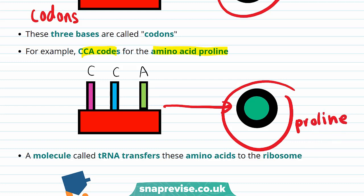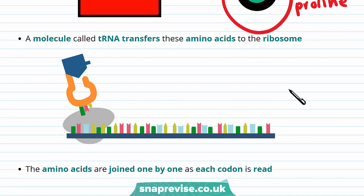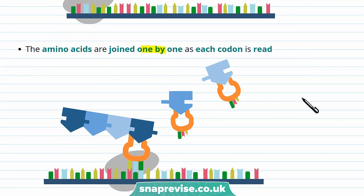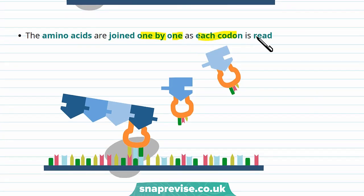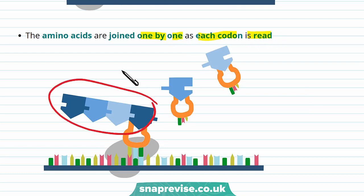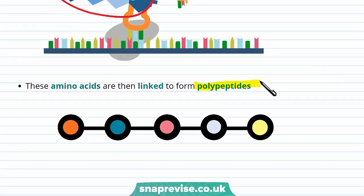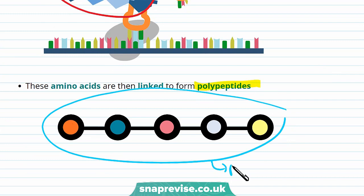So now we know what amino acids to make. A molecule called tRNA transfers these amino acids to the ribosome. The T in tRNA stands for transfer, because it transfers amino acids. These amino acids are joined one by one as each codon is read. In this diagram, you can see a growing chain of amino acids. This chain of linked amino acids is called a polypeptide.